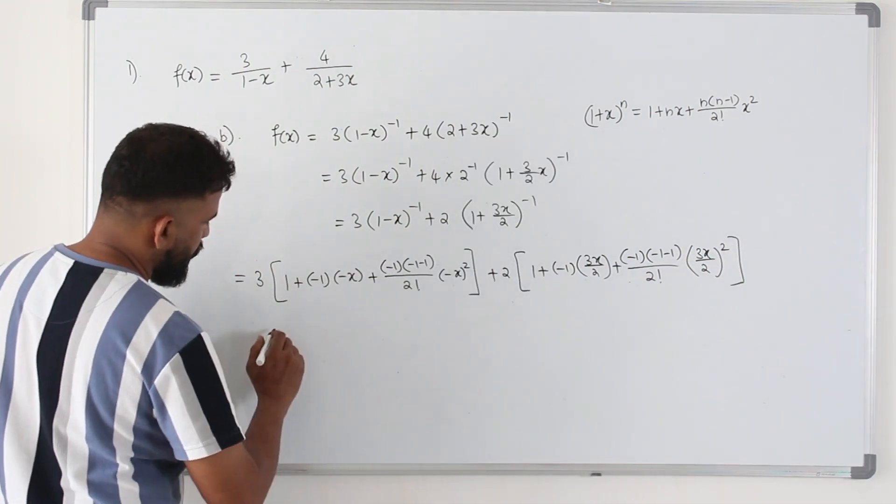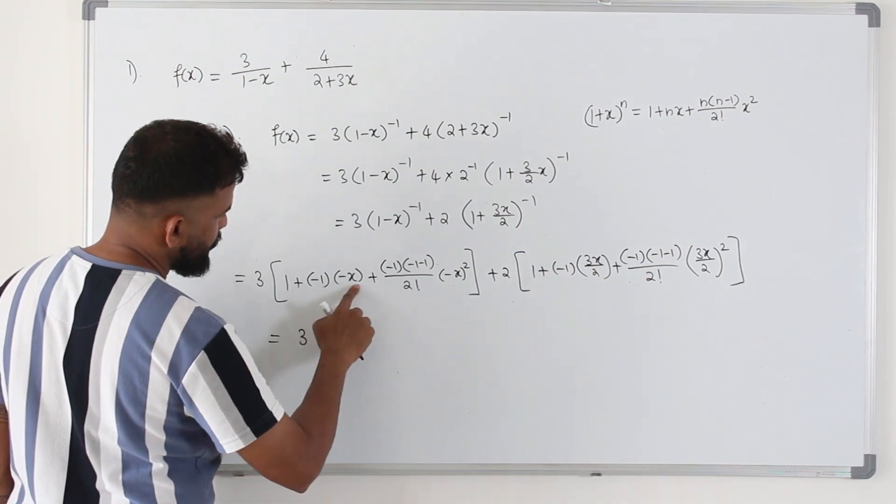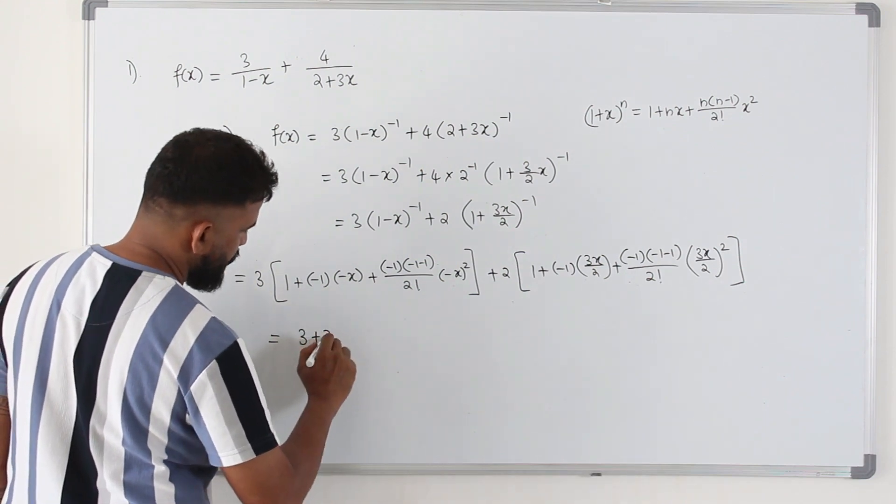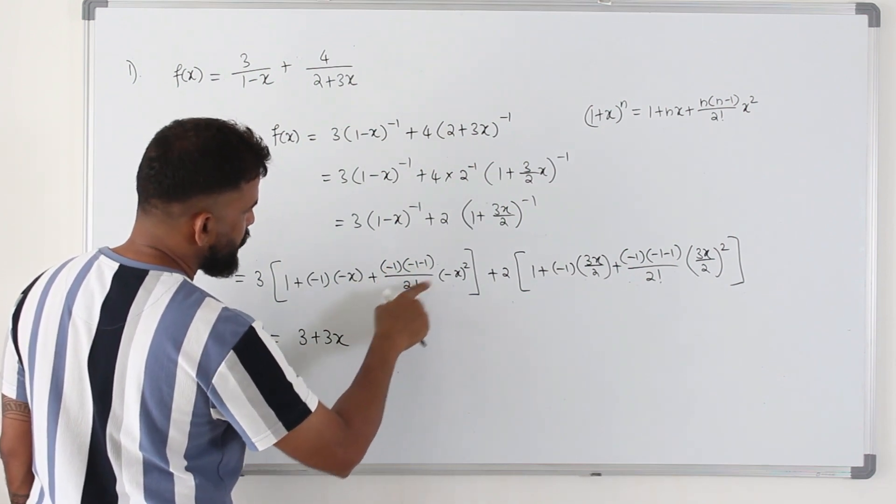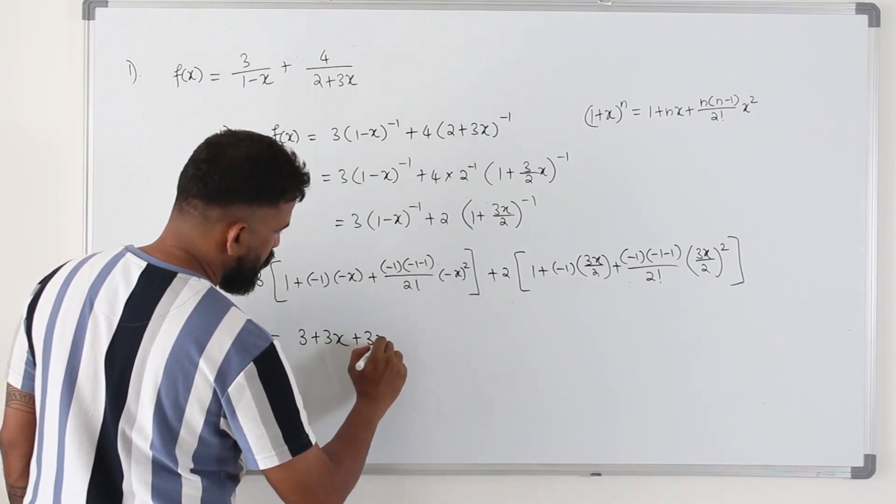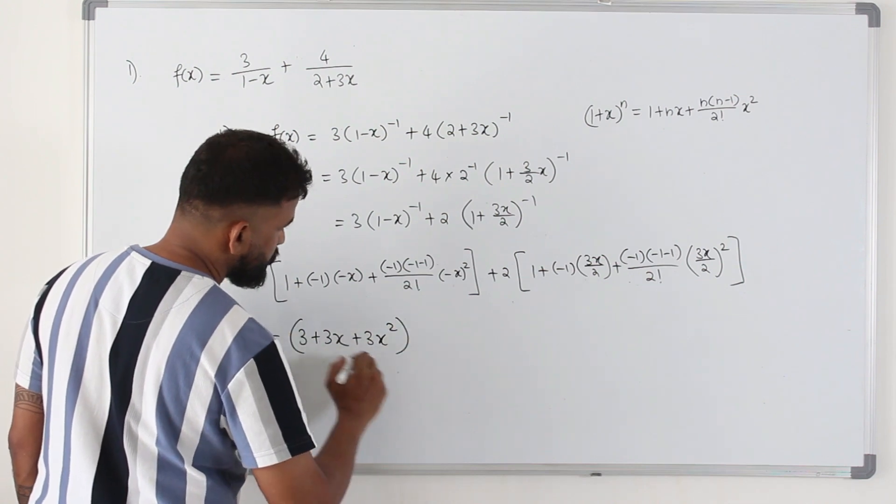Simplify and open the bracket. You will get 3. This is going to be positive x or plus 3x. Here it's going to be negative 2 positive 2. This will be cancelled. So you will get 3x square. Plus.